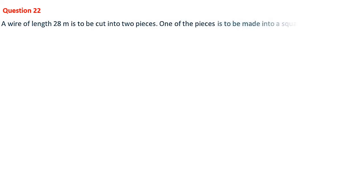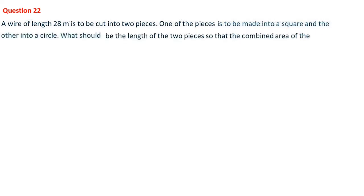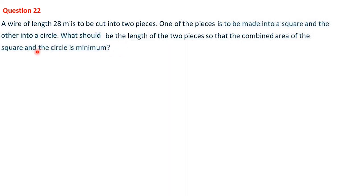Next, question number 22: a wire of length 28 meters is to be cut into two pieces. One piece is made into a square and the other into a circle. What should be the lengths of the two pieces so that the combined area of the square and the circle is minimum?